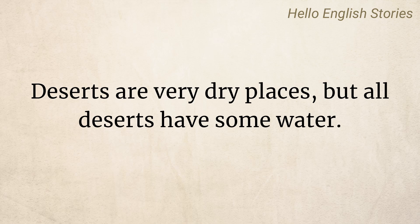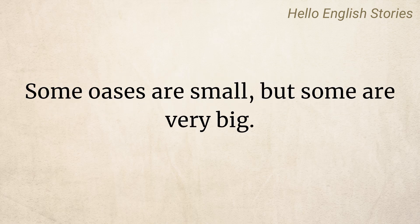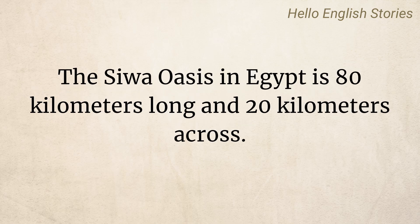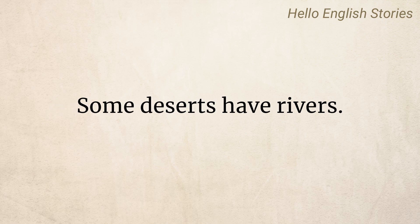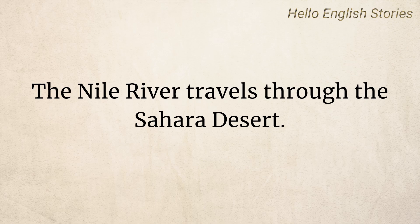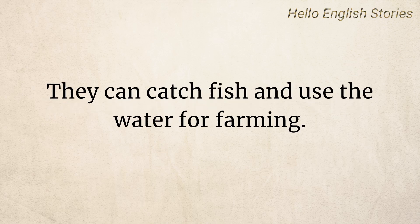Some deserts are very dry places, but all deserts have some water. An oasis is a place where water from under the ground makes a lake or pond. Some oases are small, but some are very big. The Siwa oasis in Egypt is 80 kilometers long and 20 kilometers across. About 23,000 people live here. Some deserts have rivers. The Nile River travels through the Sahara Desert. Many people live near this river. They can catch fish and use the water for farming.